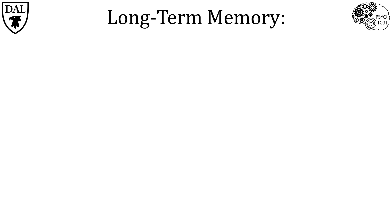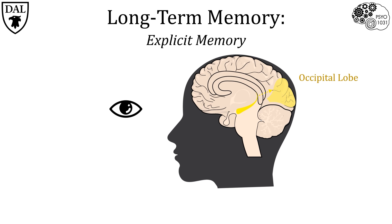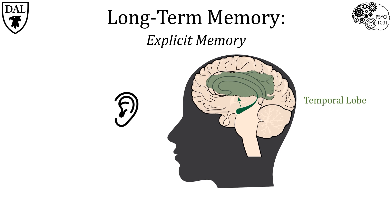What about long-term memory? Before exploring the brain structures associated with long-term memory, we should distinguish between the two general types: explicit memory and implicit memory. Explicit memory refers to information about events and facts that you are conscious of. It is processed by the hippocampus and then sent for long-term storage in the cortical area corresponding to the specific information type — for example, visual information is stored in the occipital lobe, and auditory information is stored in the auditory cortex in the temporal lobe.